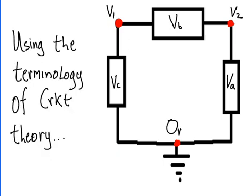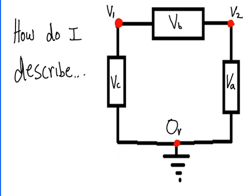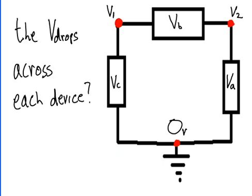Using the terminology of circuit theory, how do I describe the V drops across each device?